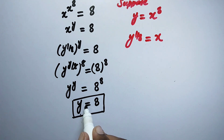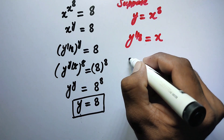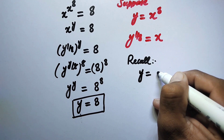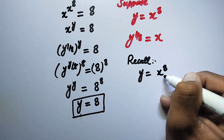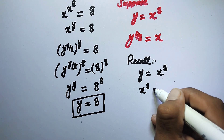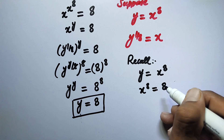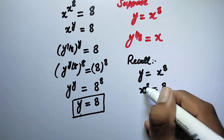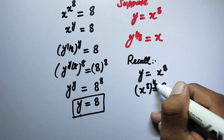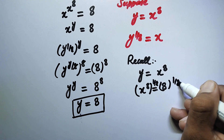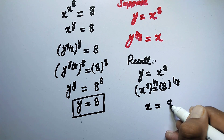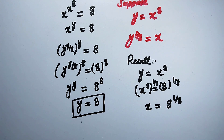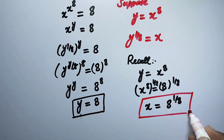We have found y, but we still need x. Recalling that we assumed y equals x to the power of 8, we substitute y equals 8 to get x to the power of 8 equals 8. To solve for x, we raise both sides to the power of 1 over 8. Therefore, x equals 8 to the power of 1 over 8. That is our final answer.